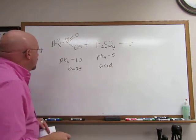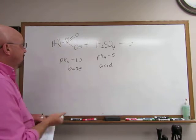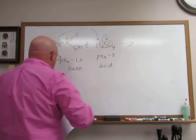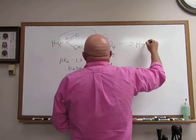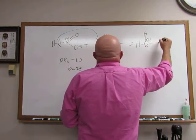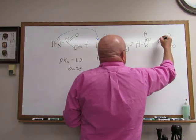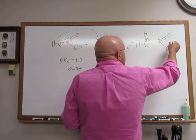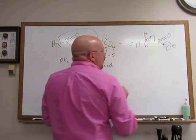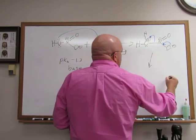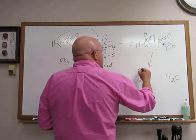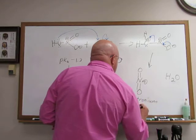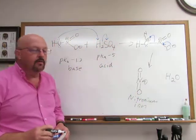When it goes and gets the proton, it is the OH oxygen — any of the oxygens could do it — but if you use the OH, that's going to give us a water molecule, which is a good leaving group. Now the water could leave on its own, or it can get a little help from the oxygen with the negative charge. We can kick a pair of those electrons in to form a double bond, and that helps push off the water molecule. So we get a water molecule that leaves, and we have made this species.